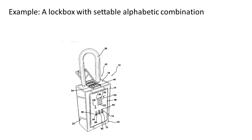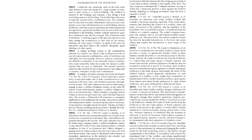Let's take a look at a real-world example. Here is a drawing from a patent application for a lockbox, like the type often used in real estate. This box may hold a key and be locked and secured to the front door of a property so various real estate agents can gain access to show the home to a client. One unique thing about this particular lockbox is that it has an alphabetic settable combination, so you can make an easy-to-remember word or string of characters to open the box.